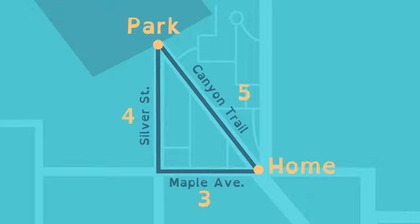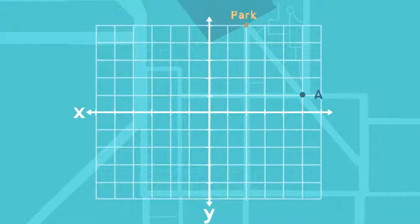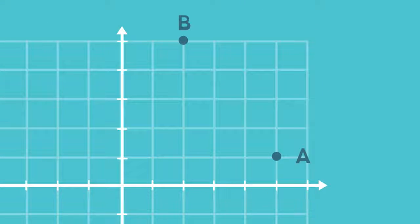What if Lucy doesn't know the lengths of Maple Avenue and Silver Street? A coordinate plane can help. Lucy's house and the park can be points on the plane, one at (5,1) and the other at (2,5).